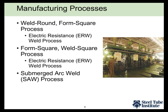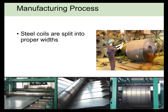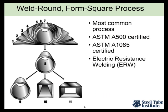The steel comes to the HSS manufacturer in coils at the required thickness. They take these coils, unwind them, and split them into the width needed to produce the sections they're going to make. This preparation step is common to all three of the manufacturing processes.